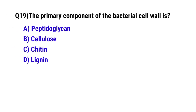Question number 19. The primary component of the bacterial cell wall is. The correct option is A: peptidoglycan.